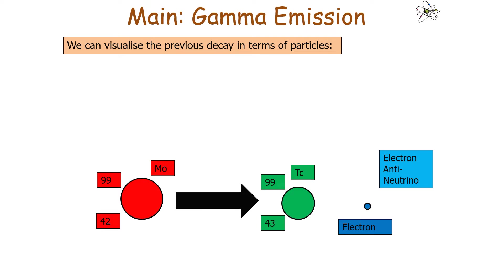We can visualize this decay in terms of particles. You can see we've got our unstable nucleus turning into a more stable nucleus, an electron and an electron antineutrino.